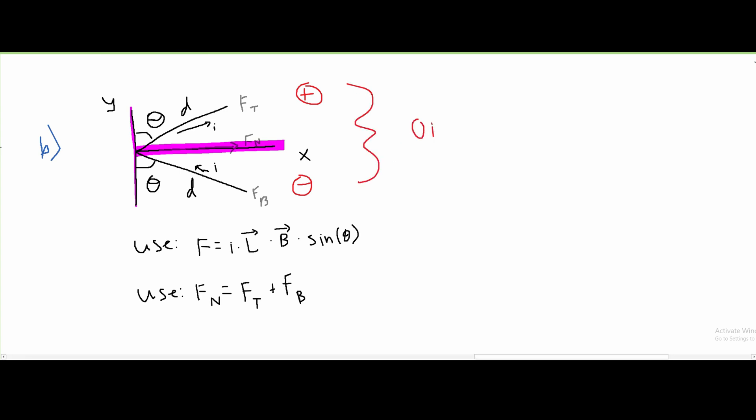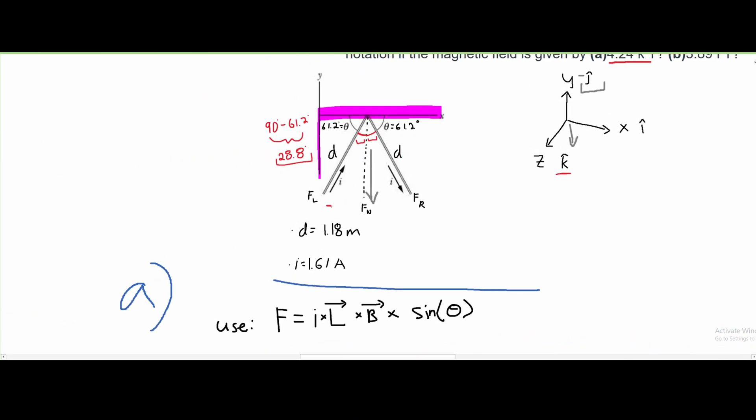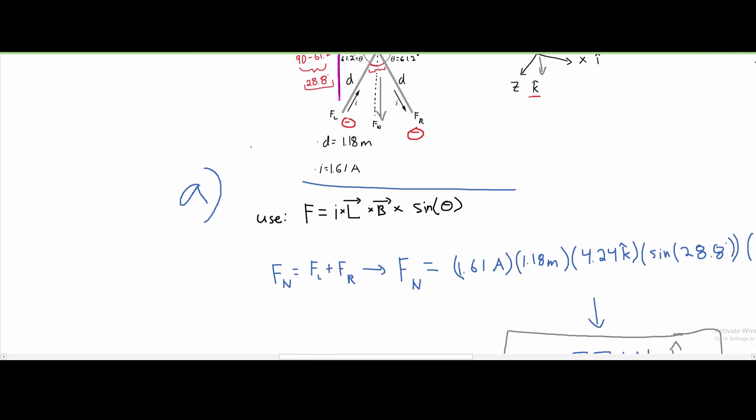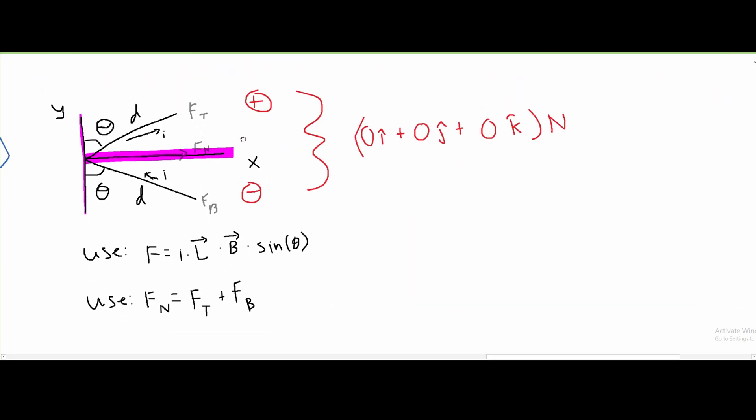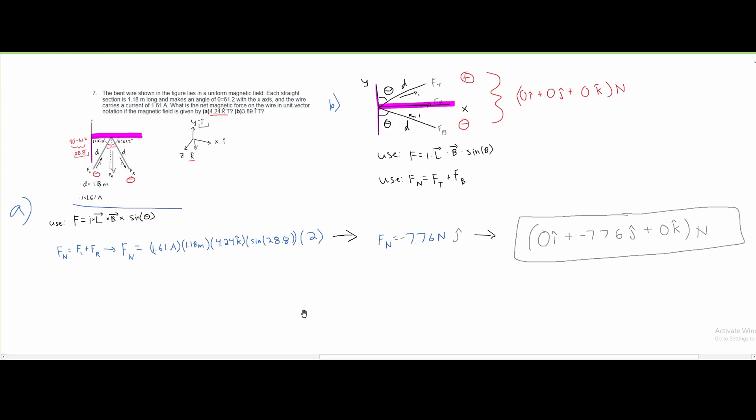So we have 0i plus 0j plus 0k newtons. That is the unit vector notation for that. Back in part a, these are both in the negative direction, which is why they are added together. In part b, f_top is positive and f_b is negative. That is all the work necessary for number seven.